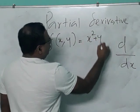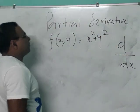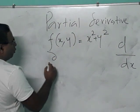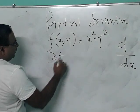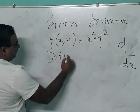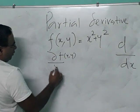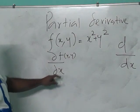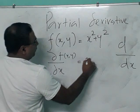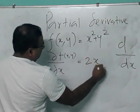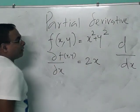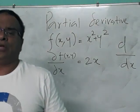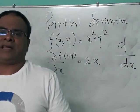Then the partial derivative — here we use the notation dou (∂). Dou f by dou x: differentiating with respect to x will give 2x, because y squared is a constant. The derivative of a constant is 0 — most important thing. Derivative of 5 is 0, derivative of 6 is 0.